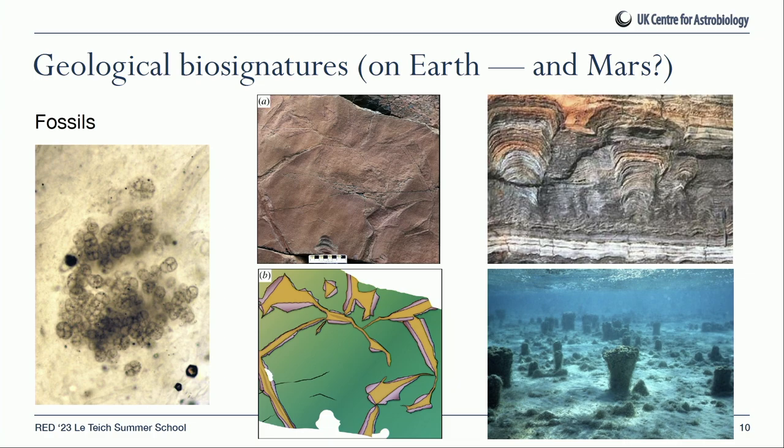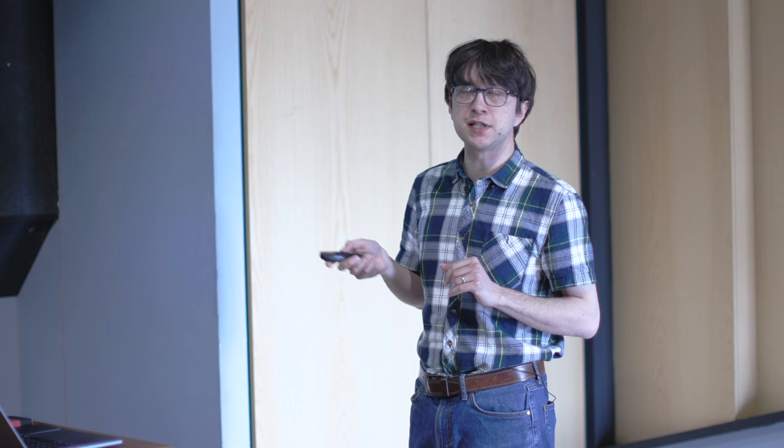Then there are stromatolites. These living examples are from Shark Bay, West Australia — columns and domes produced by photosynthesizing microorganisms that grow up toward the light. They mediate precipitation of carbonate minerals and trap and bind sediment particles, so as they grow they're forming a rock — sometimes called living rocks. These are very common fossils in Precambrian rocks of the Earth, with the same kind of columnar shapes. They're among the oldest lines of evidence for life on Earth, and very optimistically maybe we'll find them on Mars.